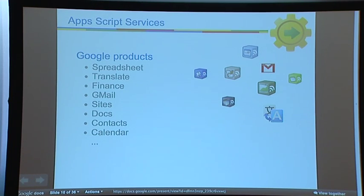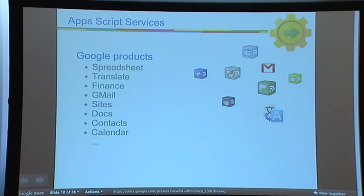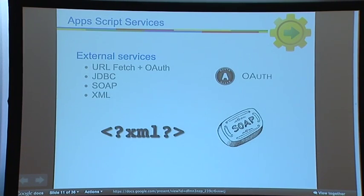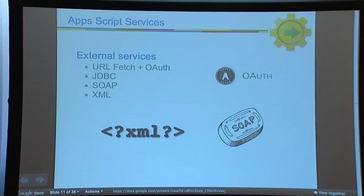What is inside Apps Script? You have easy access to a bunch of Google products: Spreadsheet, Translate, Finance, Gmail, Sites, Docs, Contacts, Calendar, and more — we're adding more over time. You can also access external services using the URL fetch feature, and even access OAuth-protected resources. There's a JDBC connector for SQL databases, SOAP support, and an XML parser to allow you to access third-party data.